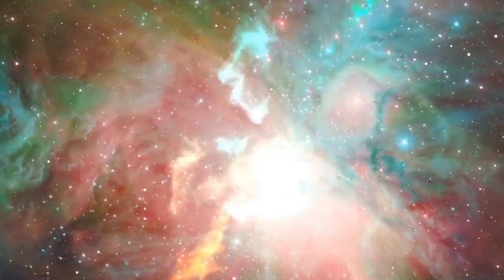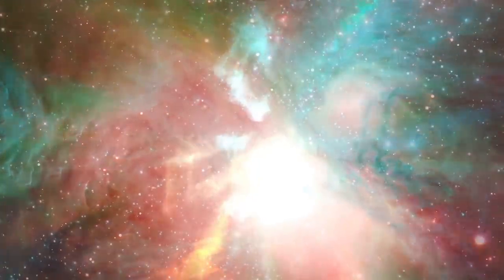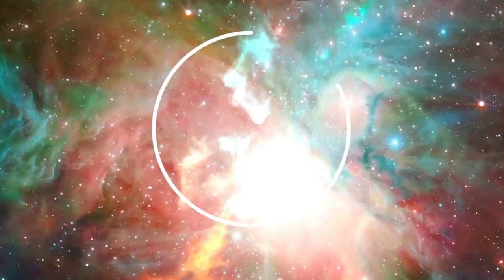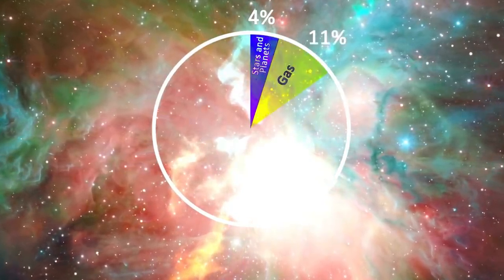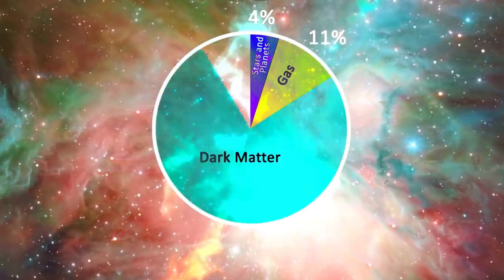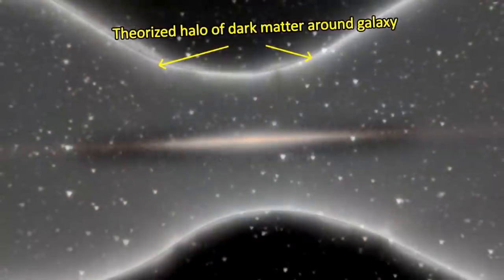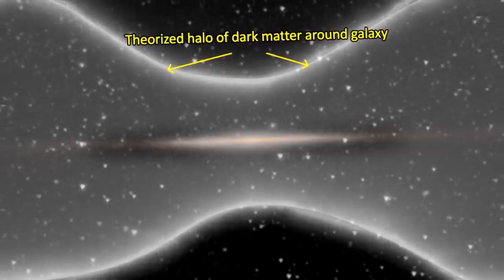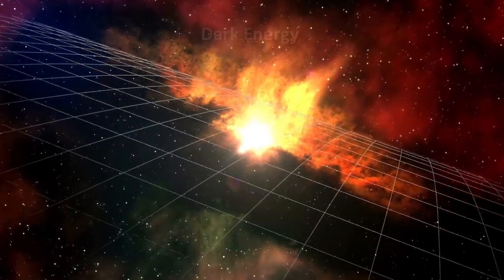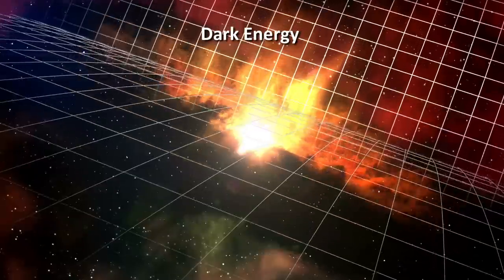The precise reasons why the masses are what they are and the constants are what they are is an open question though. We can only speculate at this point, but one of the main things we should keep in mind is that our understanding of the universe is incomplete, and we know it is incomplete. We can't explain dark matter, dark energy, the asymmetry of matter versus antimatter, and a host of other things.